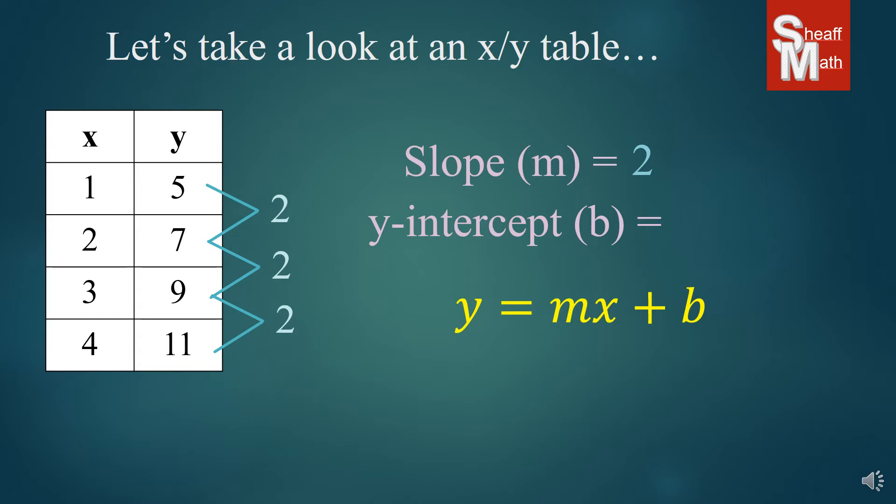Now the y-intercept we don't have a 0 term here. So how are we going to find the y-intercept? Well, we're going to have to find what the 0 term is. And so since we have 1, 2, 3, 4, and 0 is just 1 below that, I'm going to put a 0 above the x and y here. And since it's going up by 2 each time, if we were to go backwards, then we would subtract 2 to get 3. And 3 would be our y-intercept. And if you look at that, it makes a lot of sense. It's going up by 2 each time all the way from 0.